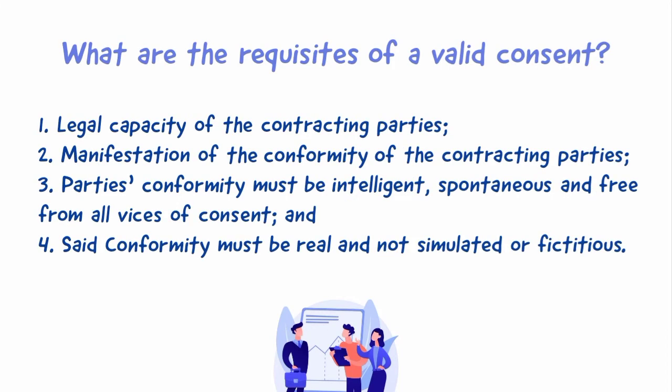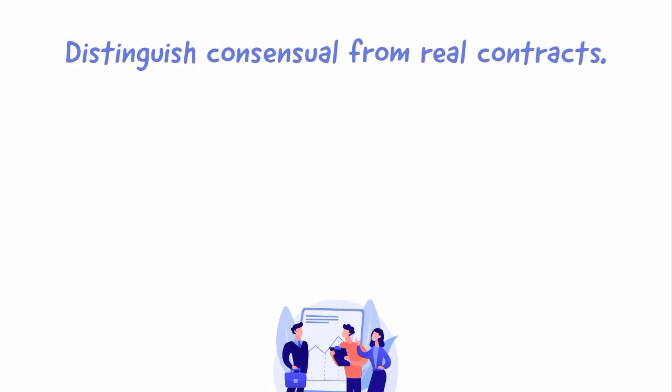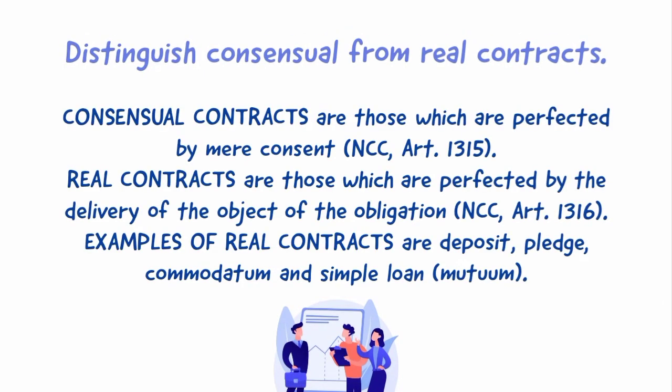What are the requisites of a valid consent? For consent to be valid, the following requisites should be present: 1) legal capacity of the contracting parties, 2) manifestation of the conformity of the contracting parties, 3) the parties' conformity must be intelligent, spontaneous, and free from all vices of consent, and 4) said conformity must be real and not simulated or fictitious.